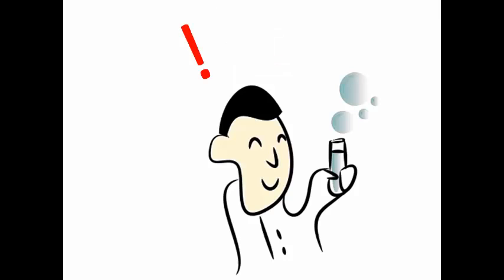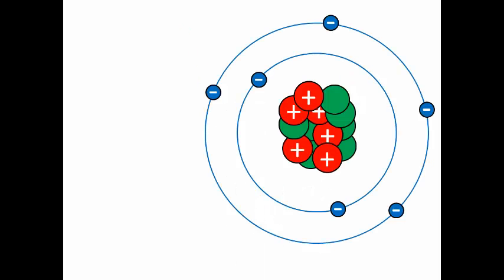But scientists have done experiments which give them an idea of what an atom maybe looks like. And this is a very simple drawing showing a little bit of what the scientists think an atom looks like. So everything in the whole world consists of little particles like this. Billions and billions and billions of tiny little particles like this, tiny little atoms.